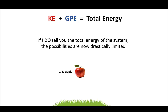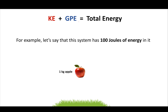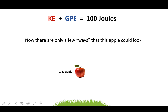But if I do tell you the total energy of the system, your possibilities are now limited. For example, let's say this system has 100 joules of total energy. In that case, there are only a few ways the apple could look, because there are only a few different ways this 100 joules could be distributed among gravitational and kinetic energy.